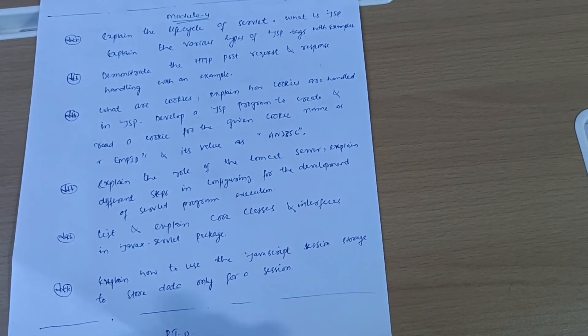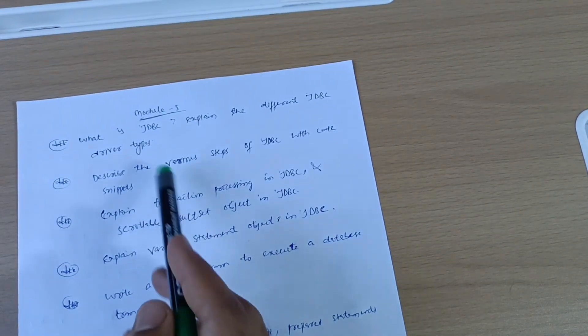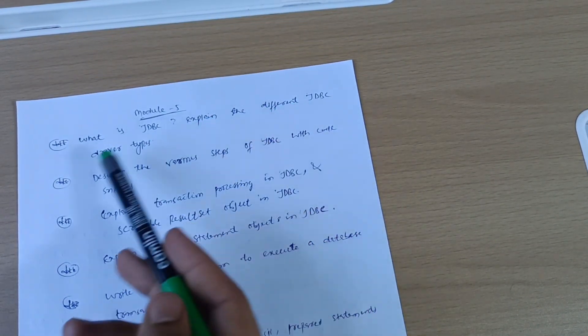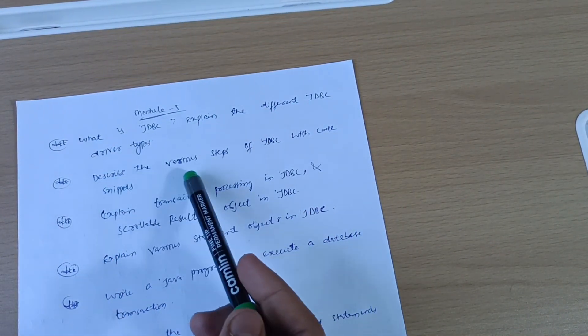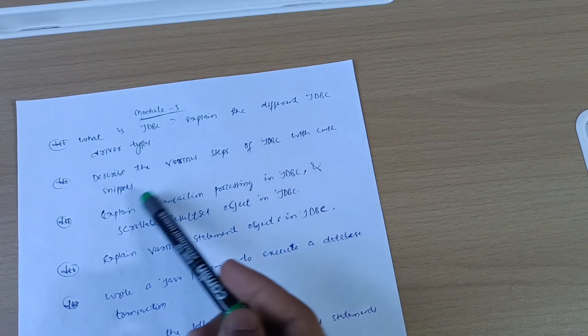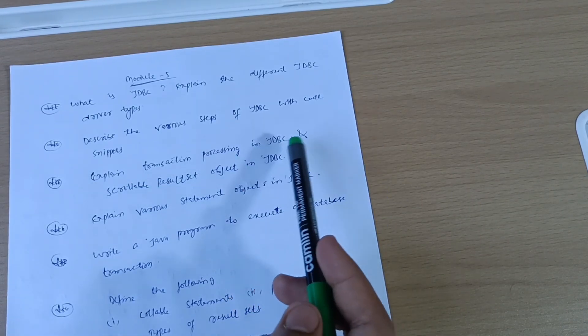This is all about model four. Now let us discuss model five, last module. What is JDBC? Explain the different JDBC driver types. Describe the various steps of JDBC with core snapshots. Expand transaction processing in JDBC and scrollable result set object in JDBC.